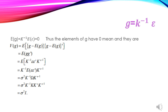We have the expectation of K⁻¹ε ε' K⁻¹' equals K⁻¹ times expectation of εε' times K⁻¹' equals sigma squared times K⁻¹ΩK⁻¹'. So the variance of g equals sigma squared times I, confirming the transformed errors are homoscedastic and uncorrelated.